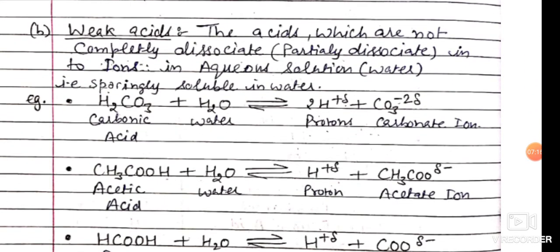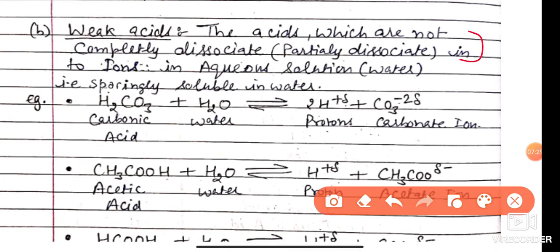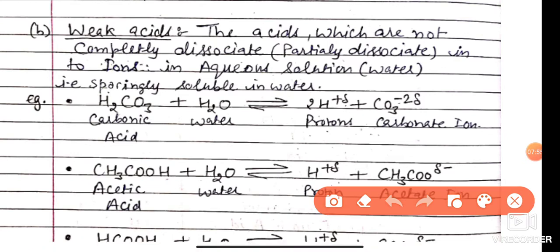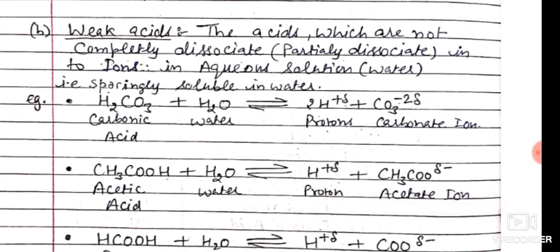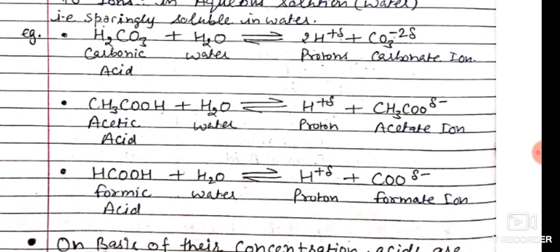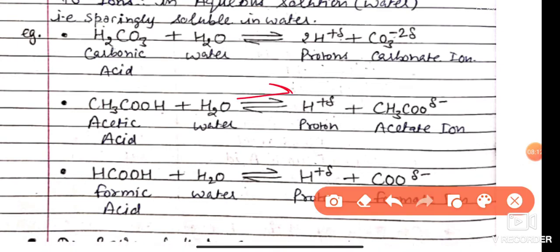Next are Weak acids. The acids which do not completely dissociate — that is, they partly or partially dissociate into ions in aqueous solution — are known as weak acids. For example, Carbonic acid in water partially dissociates (shown with the delta/reversible sign). Acetic acid in water partially produces proton and acetate ion. This is a reversible reaction and represents partial dissociation. Similarly, Formic acid is also a weak acid.